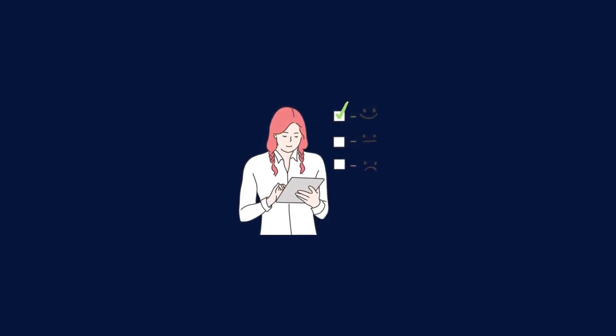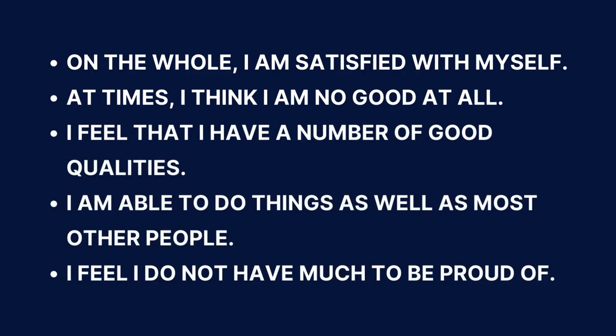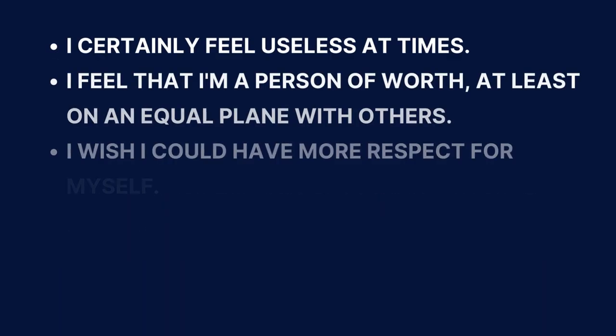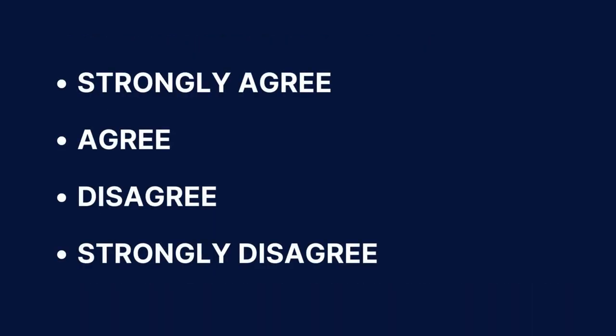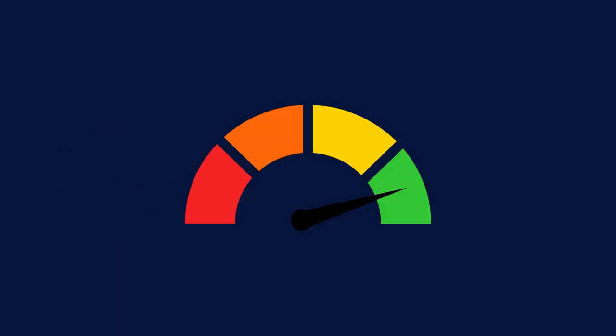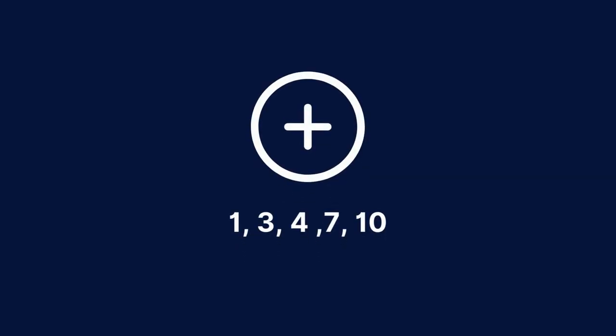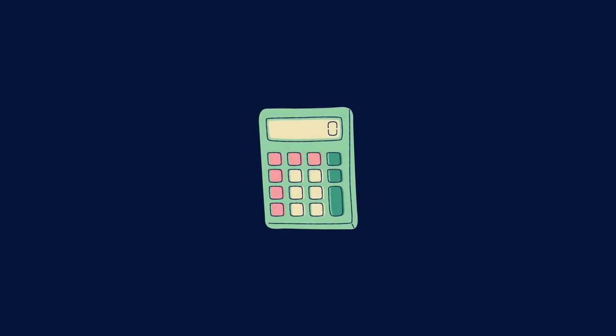Whichever approach you choose, the person taking the scale will rate each item. The answer choices are: strongly agree, agree, disagree, and strongly disagree. For positive items (1, 3, 4, 7, and 10), strongly agree equals 4 points, agree equals 3, disagree equals 2, and strongly disagree equals 1. For negative items (2, 5, 6, 8, and 9), the scoring is reversed — strongly disagree equals 4 while strongly agree equals 1. Then calculate the sum of all answers.